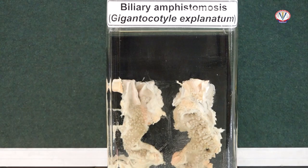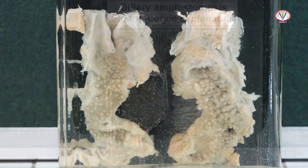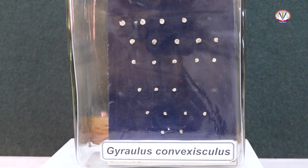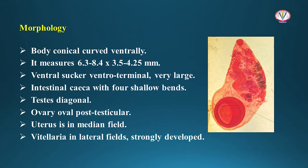Giganticotyle explanatum is present in the bile duct, gallbladder, and rarely duodenum of buffalo, cattle, sheep, and goat. The intermediate host is snail Gyraulus. The body is conical and curved ventrally. The ventral sucker is ventroterminal and very large in size. The intestinal caeca have four shallow bends. Testes are diagonal. The ovary is oval and post-testicular. The uterus is in the median field. Vitelline glands are strongly developed and present in the lateral fields.